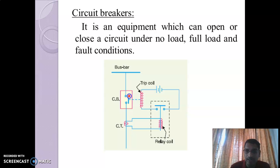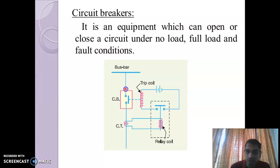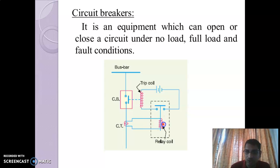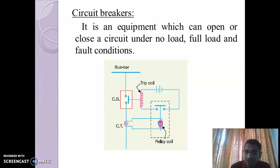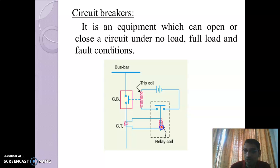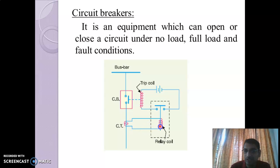During the normal condition — meaning no fault on the system or line — the circuit breaker is in the closed position. The normal current which flows through the transmission line is measured by the current transformer, and the secondary of the CT is connected to the relay coil. Every relay coil has some threshold value, and it will be energized only when the current in the secondary side of the CT exceeds that threshold value. During normal condition, the current in the line is normal, so it does not exceed the threshold value of the relay coil.